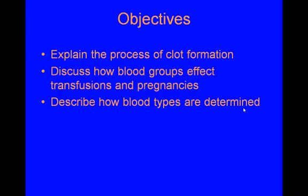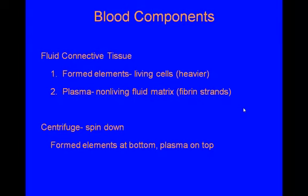Blood is a fluid type of connective tissue. It has the formed elements, which are the living cells — they're typically heavier — and plasma, the non-living fluid matrix, which does have fibrin strands in it, but we only see those in clotting. If you take the blood and centrifuge it, spin it down, the formed elements settle to the bottom while the plasma remains at the top.